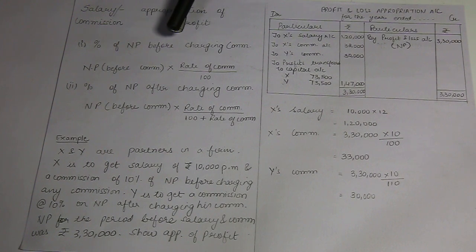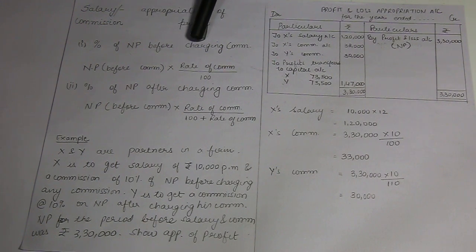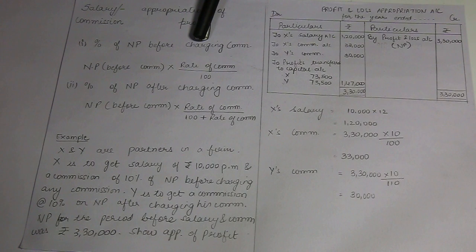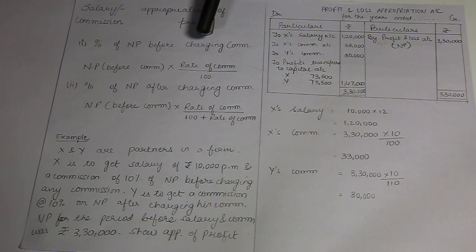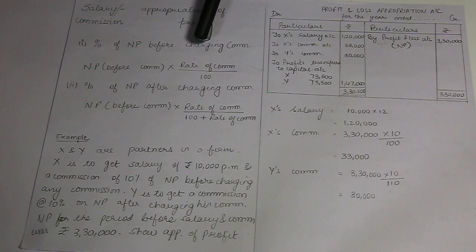Why do we do this? This means that the net profit received from the profit and loss account — for the profit and loss appropriation account — has not had any commission charged on it until now. So I have to charge commission on this amount, and after that it will be distributed to the partners as appropriation of profits.